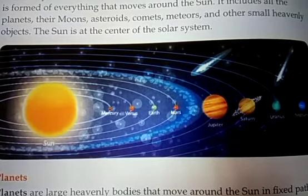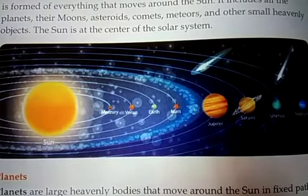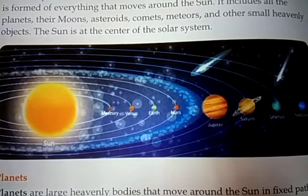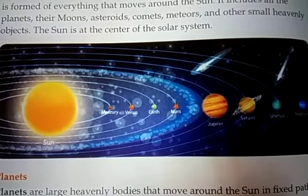As you can see in the picture there, the sun is in the middle. And all the planets and asteroids and everything are revolving around the sun. That means they are going around the sun.